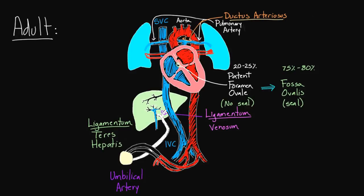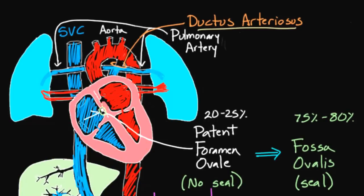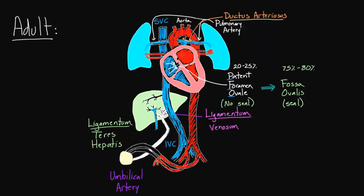So in a person with a patent foramen ovale, theoretically, if you had a lot of pressure on the right side, you would actually open that flap up and you could have a situation where all of a sudden you can move blood between the two. You can actually move blood from the right side to the left in people with what they call a PFO. But for most people, the pressure on the right side really never gets that high. So even if you have a PFO, because the pressure on the right side is almost always lower than the left side, this flap will almost always stay shut. The vast majority of people never even know it — they go on living their lives very happily even though there's really no seal.